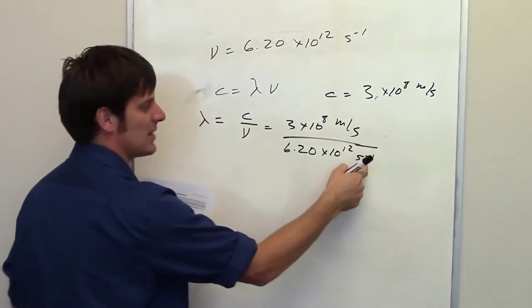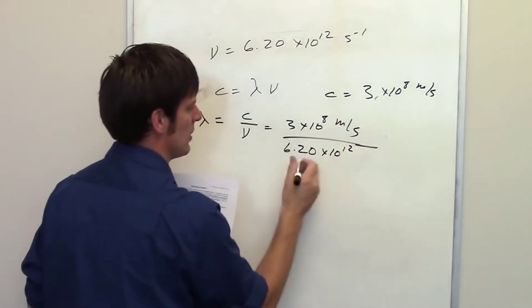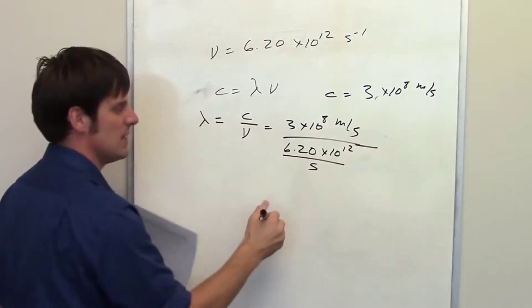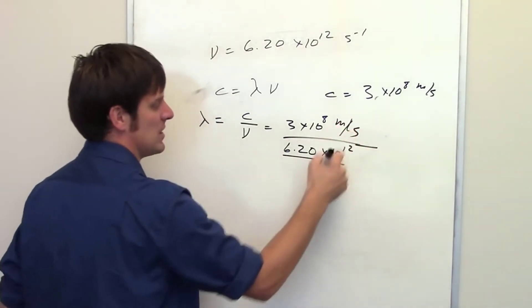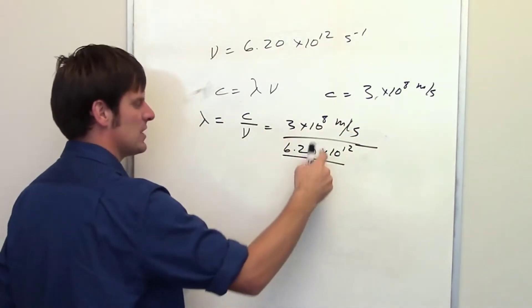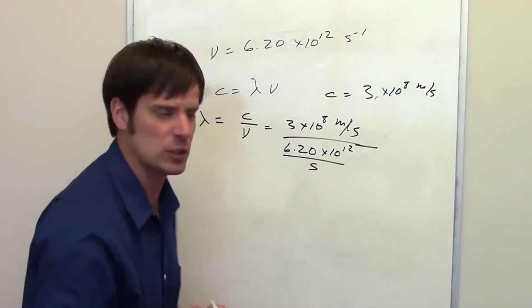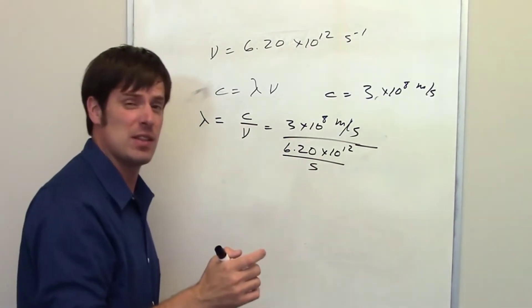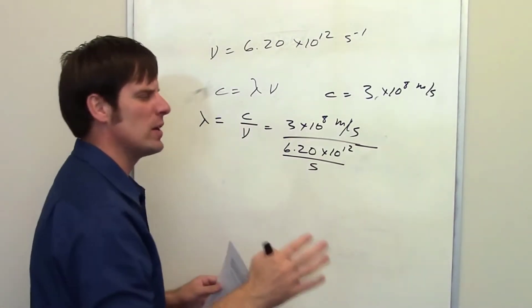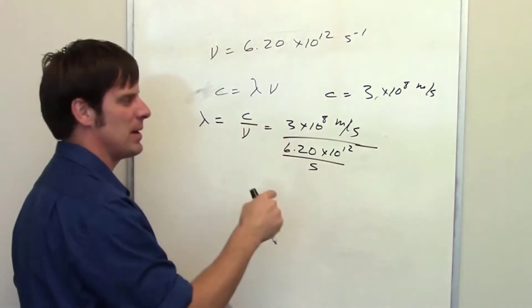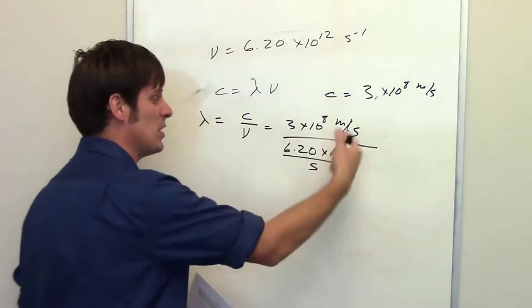Now, this is interesting because inverse seconds is really a set of units in a denominator. I've got inverse seconds in the denominator of this fraction. It's in the denominator of the denominator, actually, which means that it's actually in the numerator. Having a unit or a value in the denominator of a denominator is the same thing as having it in the numerator.